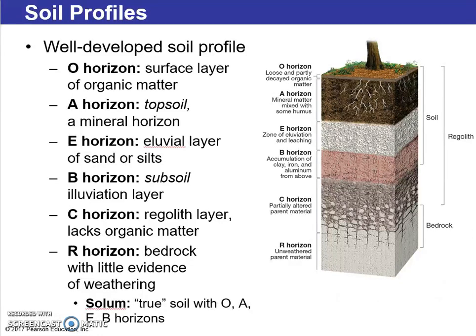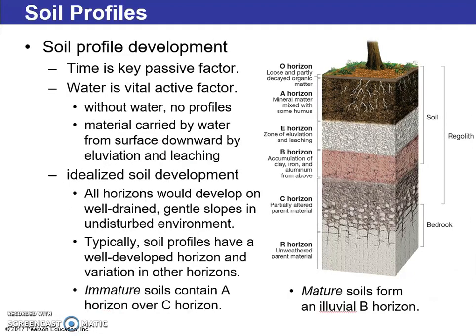The various layers briefly discussed include topsoil, illuvial layer, regolith, and bedrock, which can vary in depth. There are many influences through time, and water is critical — without water, no profiles develop because we don't see vertical movement. Soil development across all horizons would ideally develop down well-drained general slopes, though it doesn't always occur. Immature soils contain certain horizons transitioning into others.